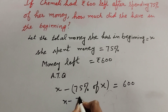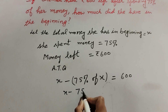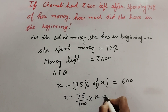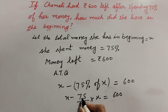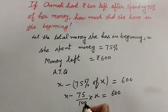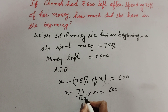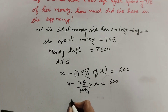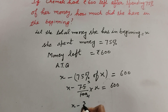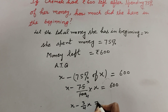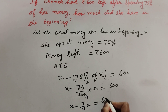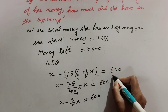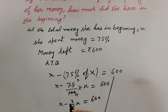Now we simplify: x minus 75 over 100 times x equals 600. We can cancel 75 and 100 on the table of 25 — 25 threes are 75 and 25 fours are 100 — so this becomes x minus 3 over 4 times x equals 600.